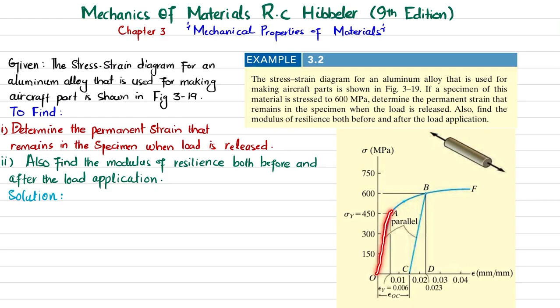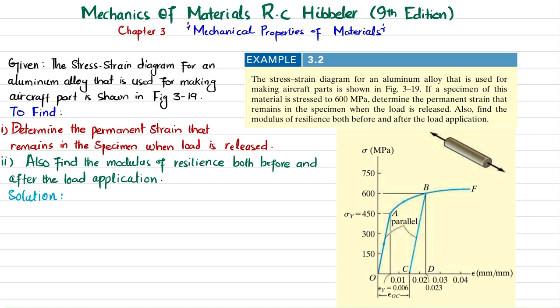You can see this is the stress-strain graph for this aluminum alloy, and a load of 600 MPa is applied. We have been asked: when this 600 MPa load is removed from the material, find the permanent set or the permanent deformation. Also find the resilience both before and after the application of load. Let's start with the solution.